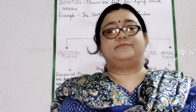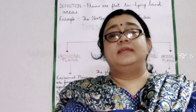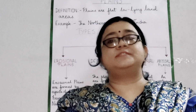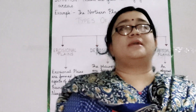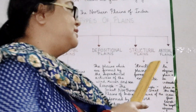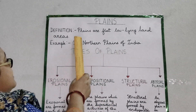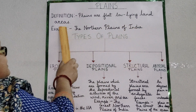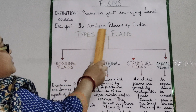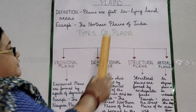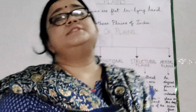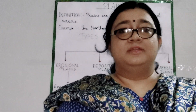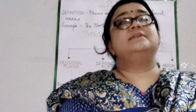Plains are one of the major landforms. Extensive, flat, low-lying land areas are known as plains. Here in this chart, you can see the definition of plains: plains are flat, low-lying land areas. For example, the northern plains of India. The word 'plain' has come from the Latin word 'planus', which means level ground.